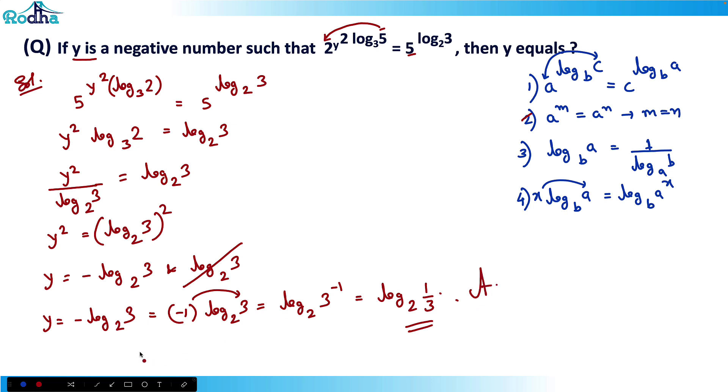This was in the option, so that's why they asked this question. So 2, 3 properties of log will be combined in a single question, and you need to solve that. So this is a CAT 2020 slot 1 question. I hope all of you got this guys, thank you.